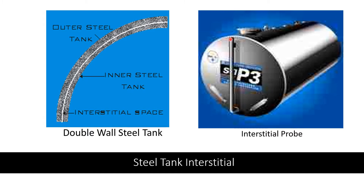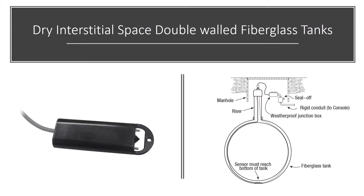For a steel tank you have a riser coming down to the bottom of the tank that can either hold a sensor that will go into alarm if any liquid touches it, or on older systems you could actually lower a baler, a stick, or waterfinding paste on a stick to see if there's anything in there. That's not really accepted for the new regulations but it's something you could see on old systems.